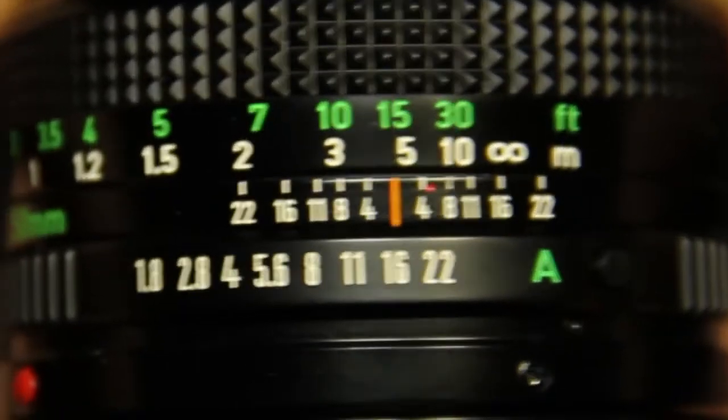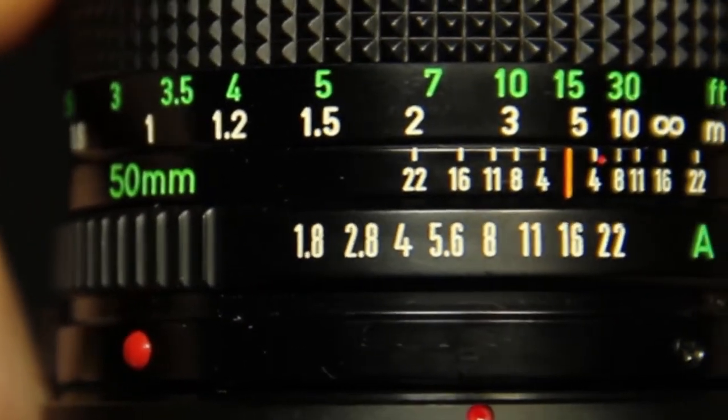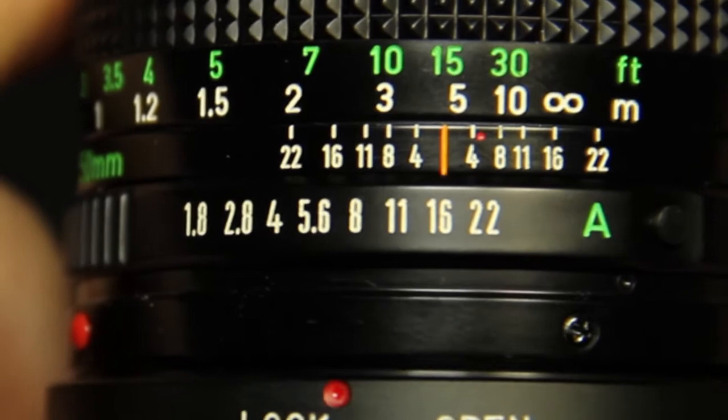This light meter makes it easy to get accurate exposure in any ambient light situation by helping you find the f-stop you should set your lens aperture to.